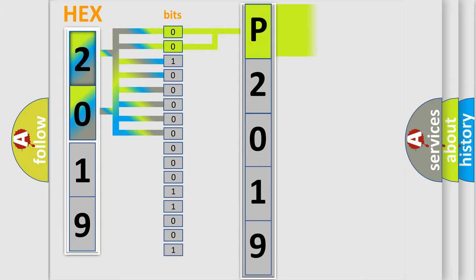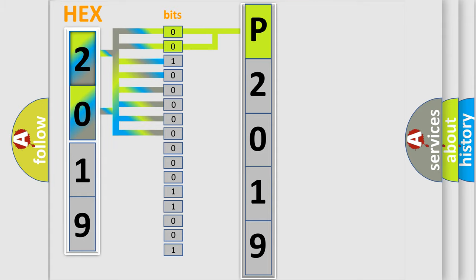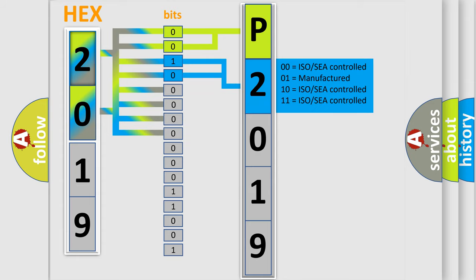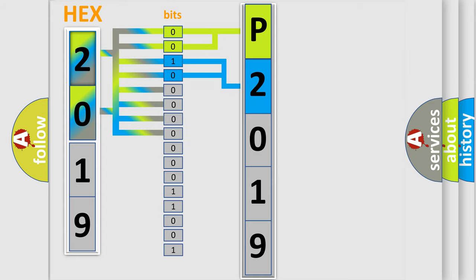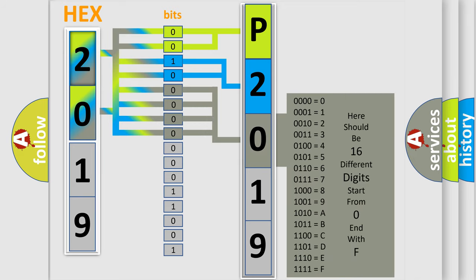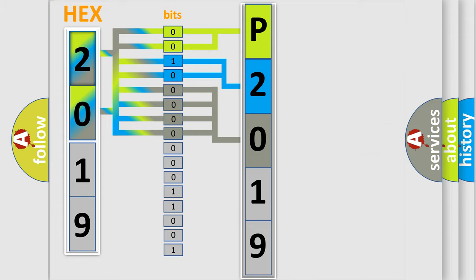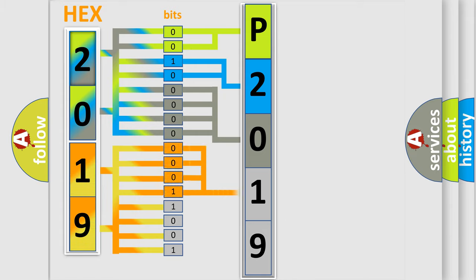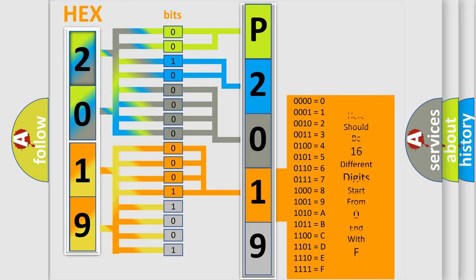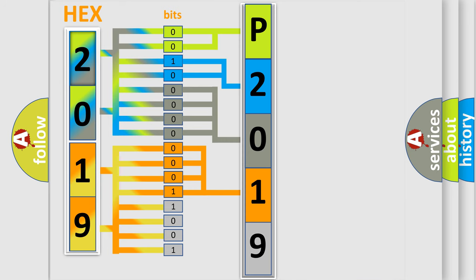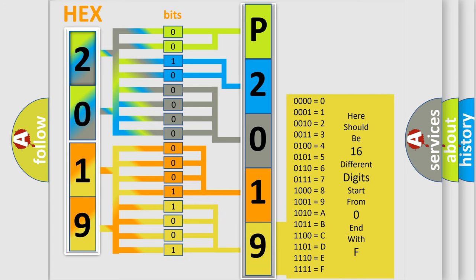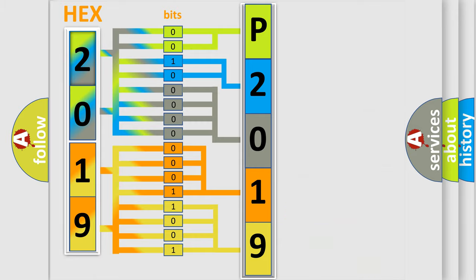By combining the first two bits, the basic character of the error code is expressed. The next two bits determine the second character. The last four bits of the first byte define the third character of the code. The second byte is composed of a combination of eight bits. The first four bits determine the fourth character, and the combination of the last four bits defines the fifth character. A single byte conceals 256 possible combinations.